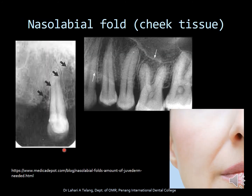The nasolabial fold is the fold on the cheek that is visible as cheek tissue, giving the appearance of a soft tissue shadow on the maxillary radiograph, especially in the canine-premolar region, as a radiopaque shadow.